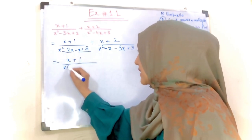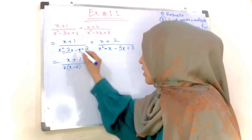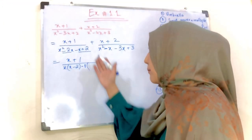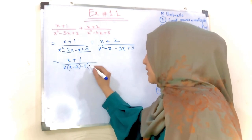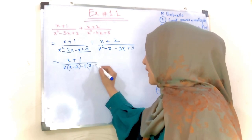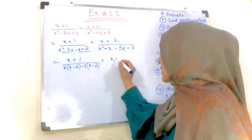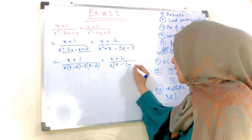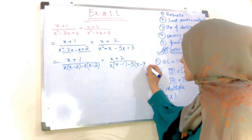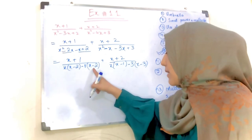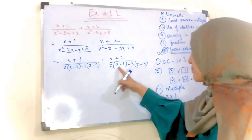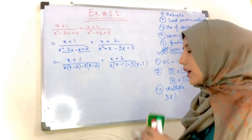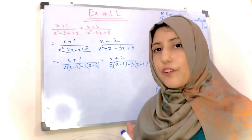Ab is ke baad hum x yahan se aur yahan se common le lete hain — x yahan aayega, x minus 2, yahan minus common lenge, minus 1 — there is no number common from them, so minus 1, x minus 2. Plus x plus 2 yahan se bhi x common lenge, x minus 1 — minus 3x minus 3. Check kijiye: x minus 2, x minus 2 same hai; x minus 1, x minus 1 bhi same hai. Iska matlab hai ke hamari factorization perfect hui hai.